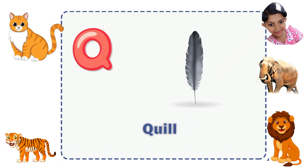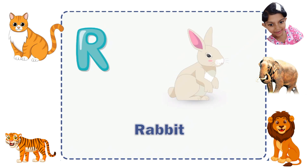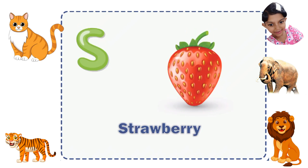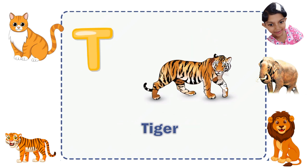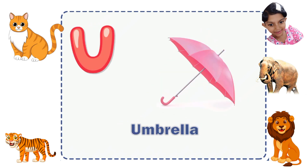Q for Quail, R for Rabbit, S for Strawberry, T for Tiger, U for Umbrella.